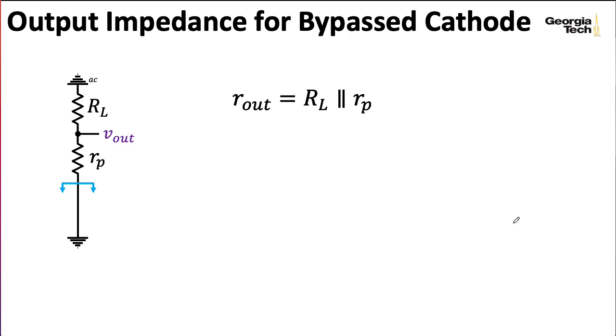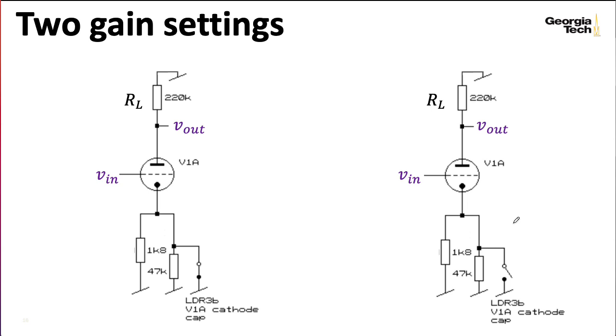Well, RL is 220K. And in the case of the situation on the left where this light-dependent resistor operating as a switch is closed, well, in that case, we wind up bypassing all of these resistors, RK equals zero. So that's our completely bypassed case, RK equals zero. In the case where this LDR switch is left open, I have these two resistances in parallel, which is around 1.7K. So as you might expect, if you completely bypass the cathode resistance, you get the highest gain. But if you have some cathode resistance in there, then you wind up lowering the gain.